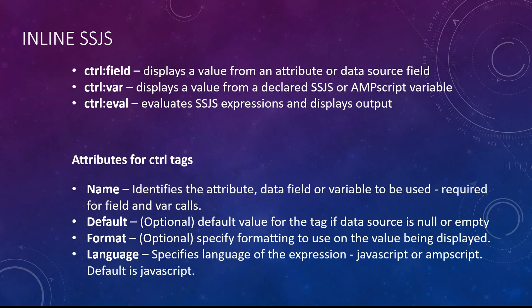Now let's look at inline SSJS. Previously we saw how to write code in an SSJS code block, but what if we want to use an SSJS value inside our HTML, similar to inline Ampscript? That's where inline SSJS comes in. There are three tags available: control:field, which displays a subscriber attribute or data extension field; control:var, which displays an SSJS or Ampscript variable; and control:eval, which evaluates a JavaScript expression or block of code.